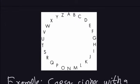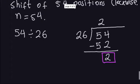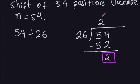So A transforms to C. You could do all 54 steps, but you'd be wasting your time — every time you complete 26 steps you just go around the circle once. That number 2 we got from the division is the number of times you go around the circle, while the remainder 2 is the actual number of positions you move clockwise.